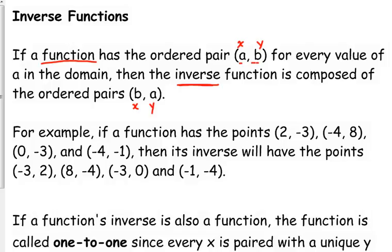So if we have this collection of points (2, -3), (-4, 8), (0, -3), and (-4, -1), then the inverse is just going to take all those points and it's going to flip them around.